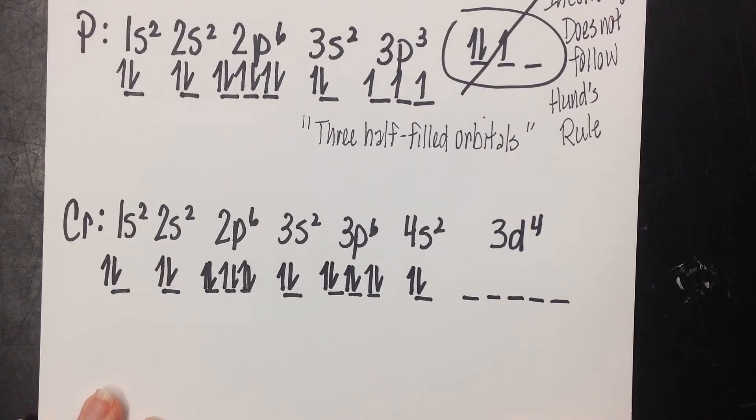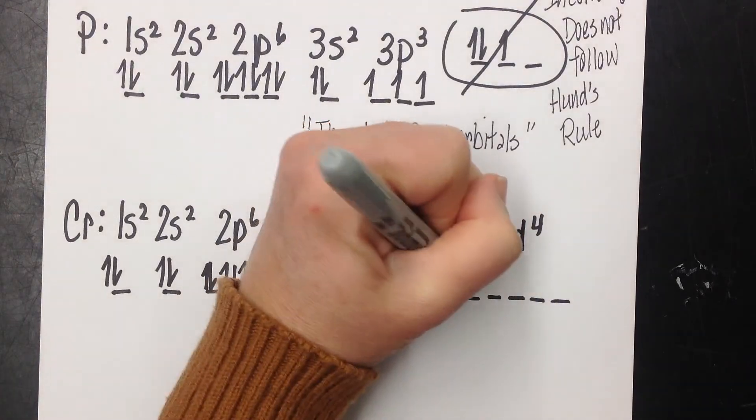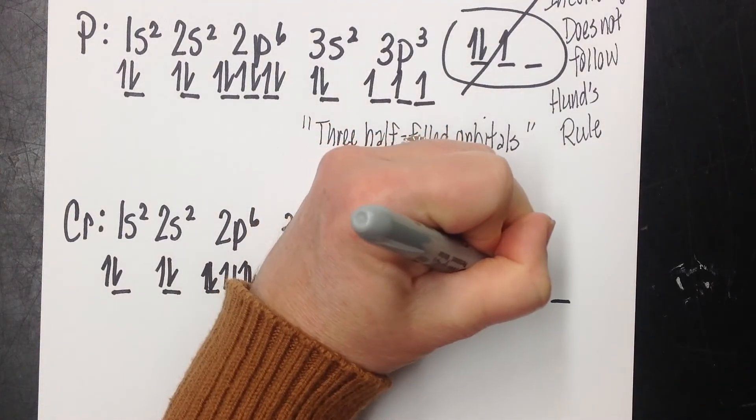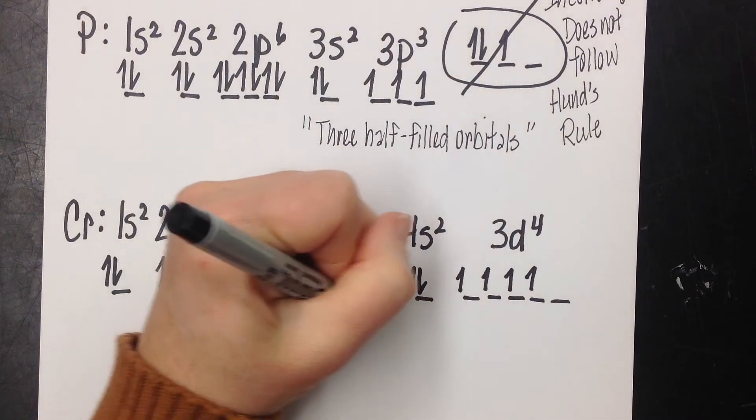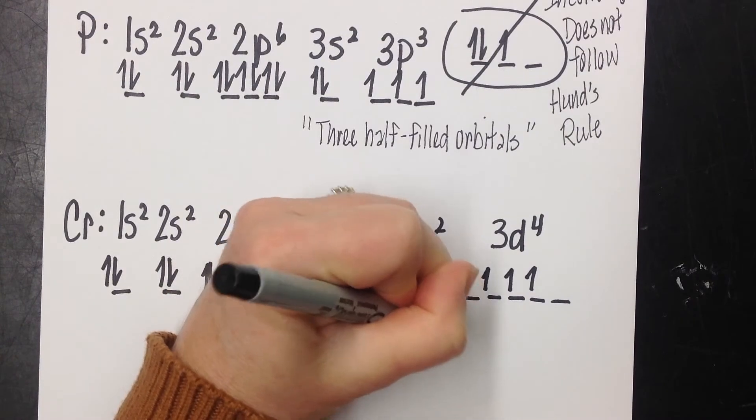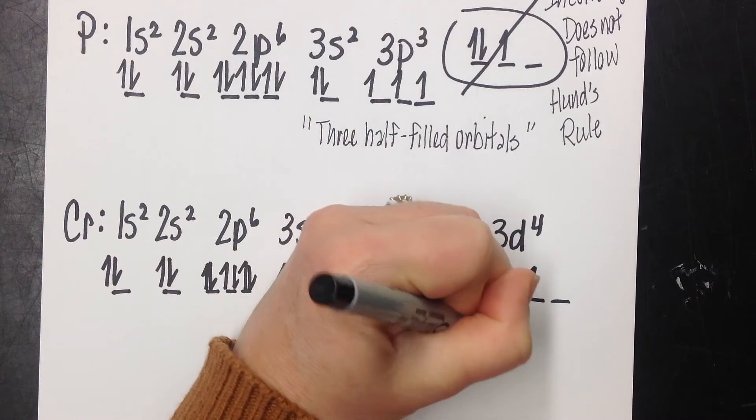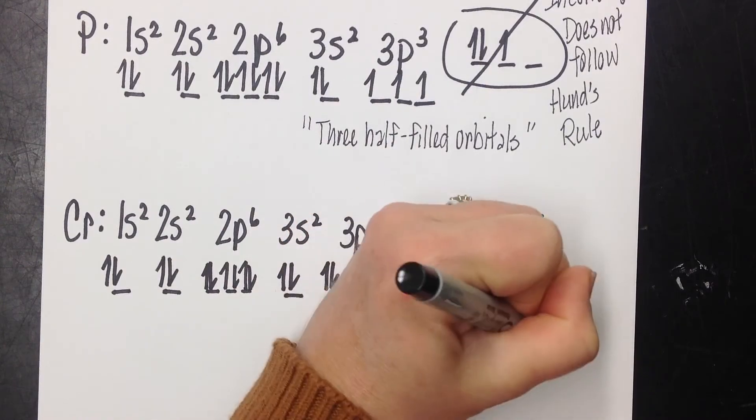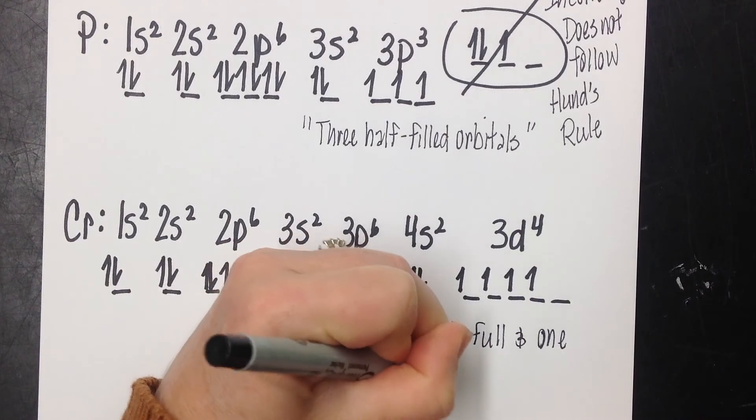Again, this is where we have to be careful, and we have to make sure that we are obeying Hund's rule. We have 4 electrons, 1, 2, 3, 4. So we would describe this as 4 half-filled orbitals, half-filled, half-full, doesn't matter, and 1 empty orbital.